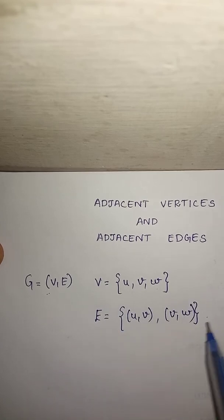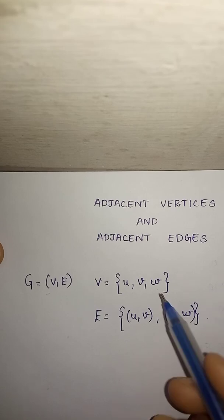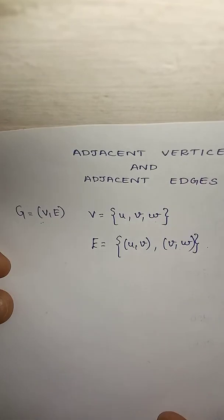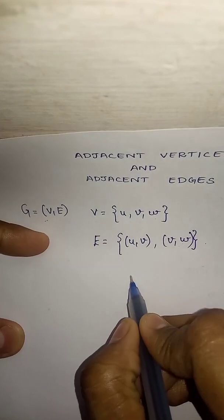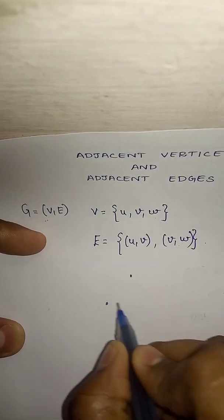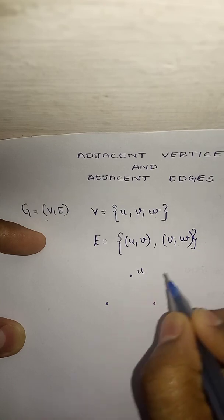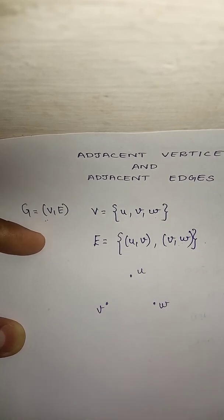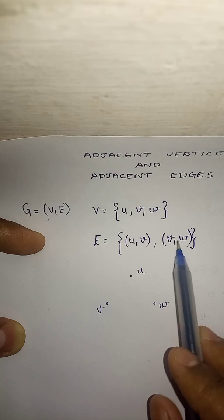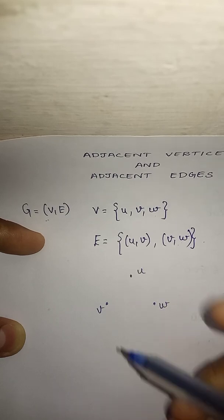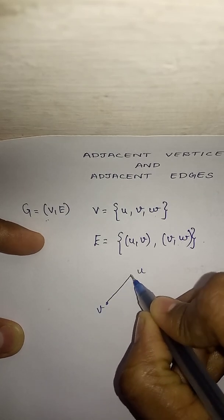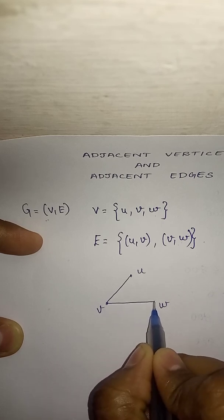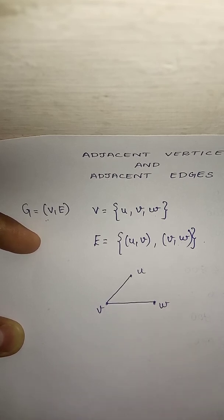UV is one edge and VW is another edge. So we have three vertices U, V and W. Here U, V and W are three vertices and the graph has two edges: UV is one edge and VW is another edge.